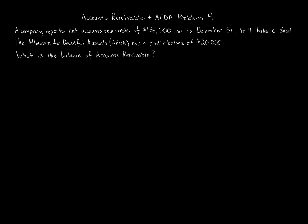This question is all about accounts receivable and Allowance for Doubtful Accounts, which are difficult concepts for students, especially if you're new to accounting. Don't worry, we'll get through this. If you're ever dealing with a difficult topic, always start by looking at what the question is asking. It's asking: what is the balance of accounts receivable? It's a pretty simple question, or at least you'd think.